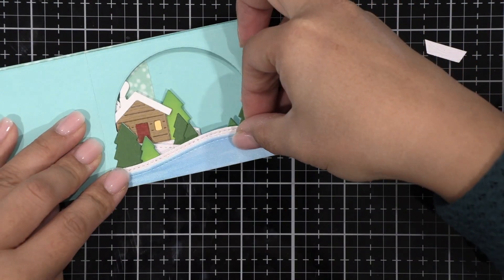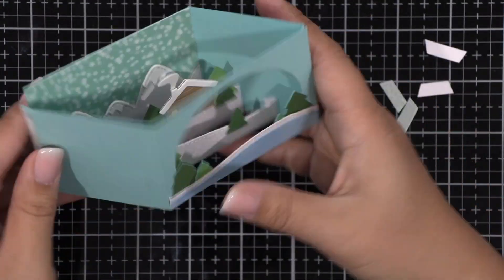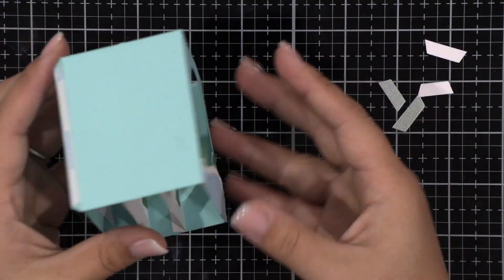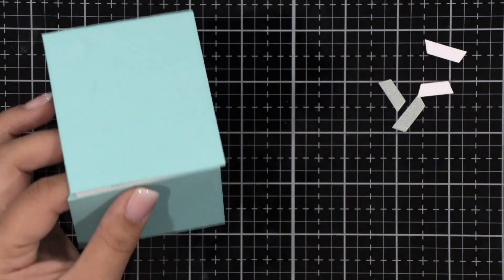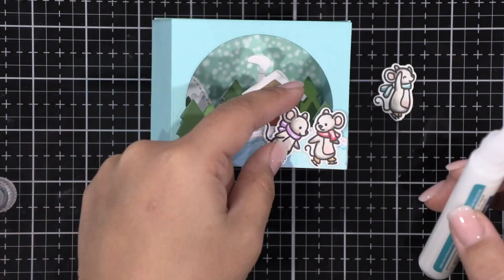I realized at this point that I should have waited to adhere the back decorative part of my card so that I could hide the flap so I did a little bit finagling and then got it under the piece that I had already glued down underneath.